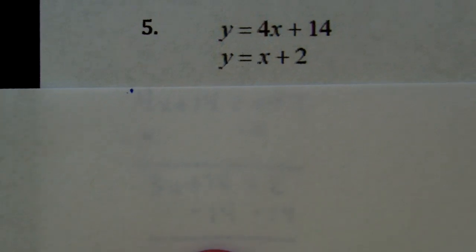Alright, problem number 5. Here we go. We have y equals 4x plus 14 and y equals x plus 2, and we are trying to solve this system by substitution to get our ordered pair.